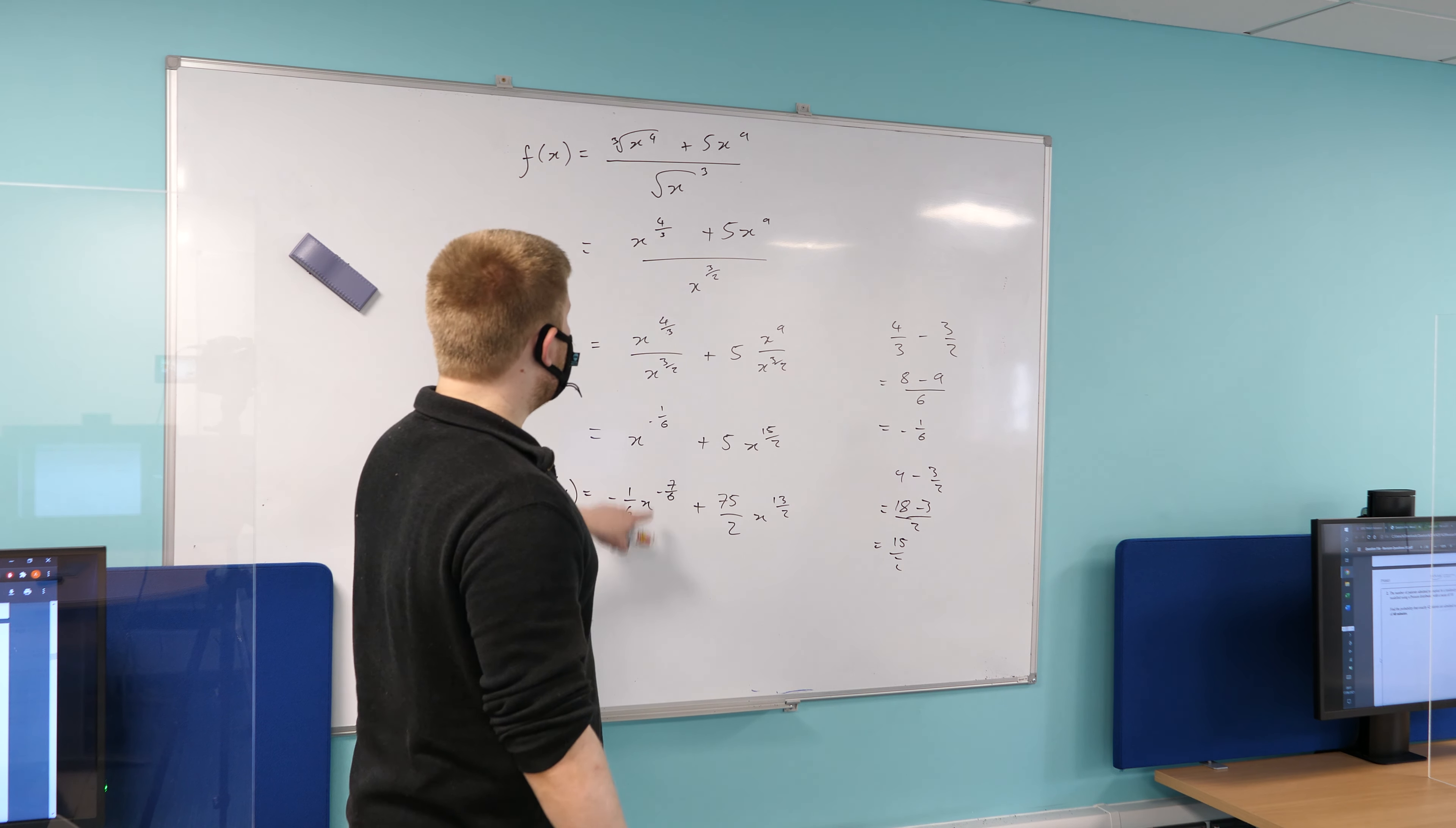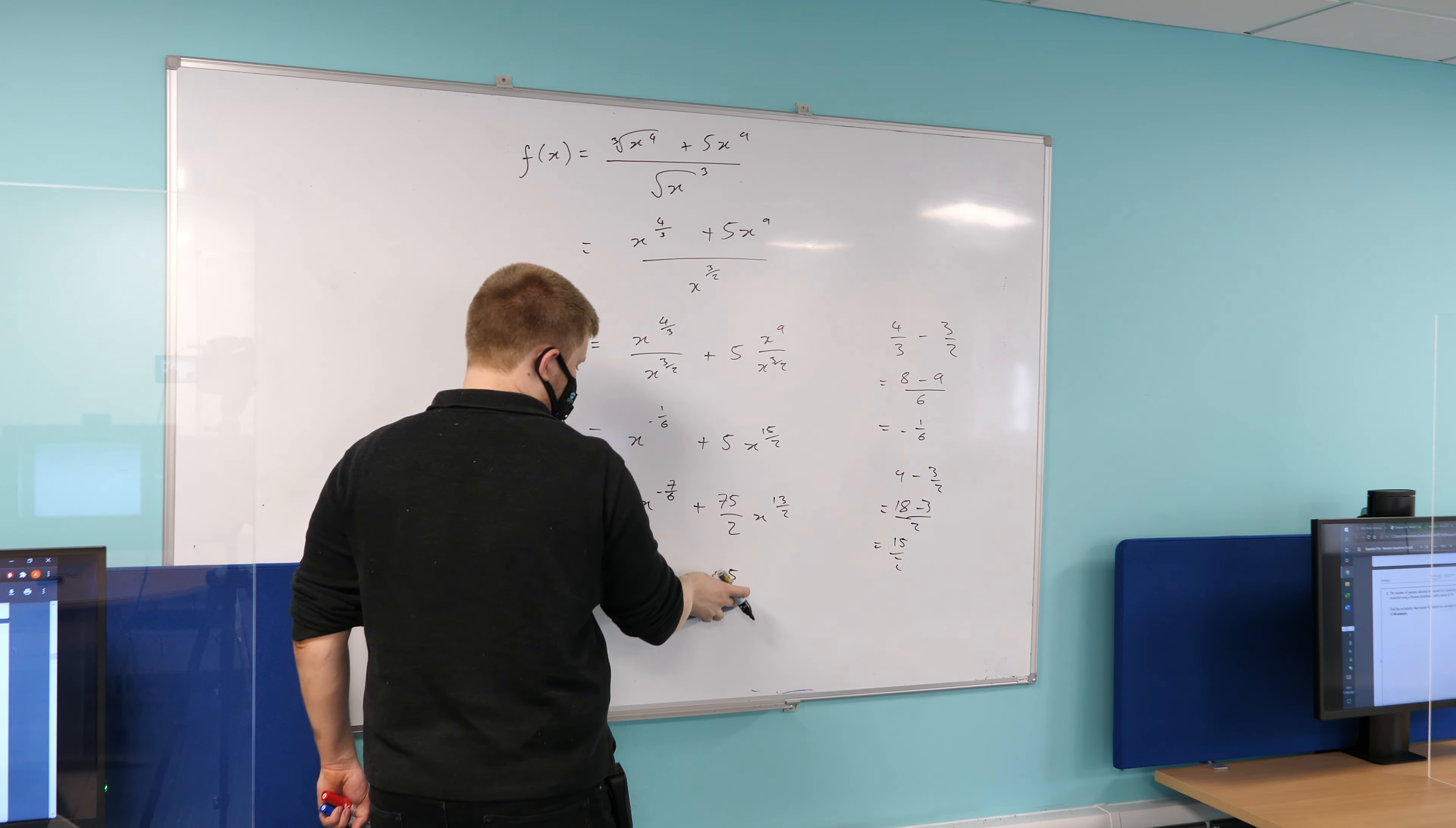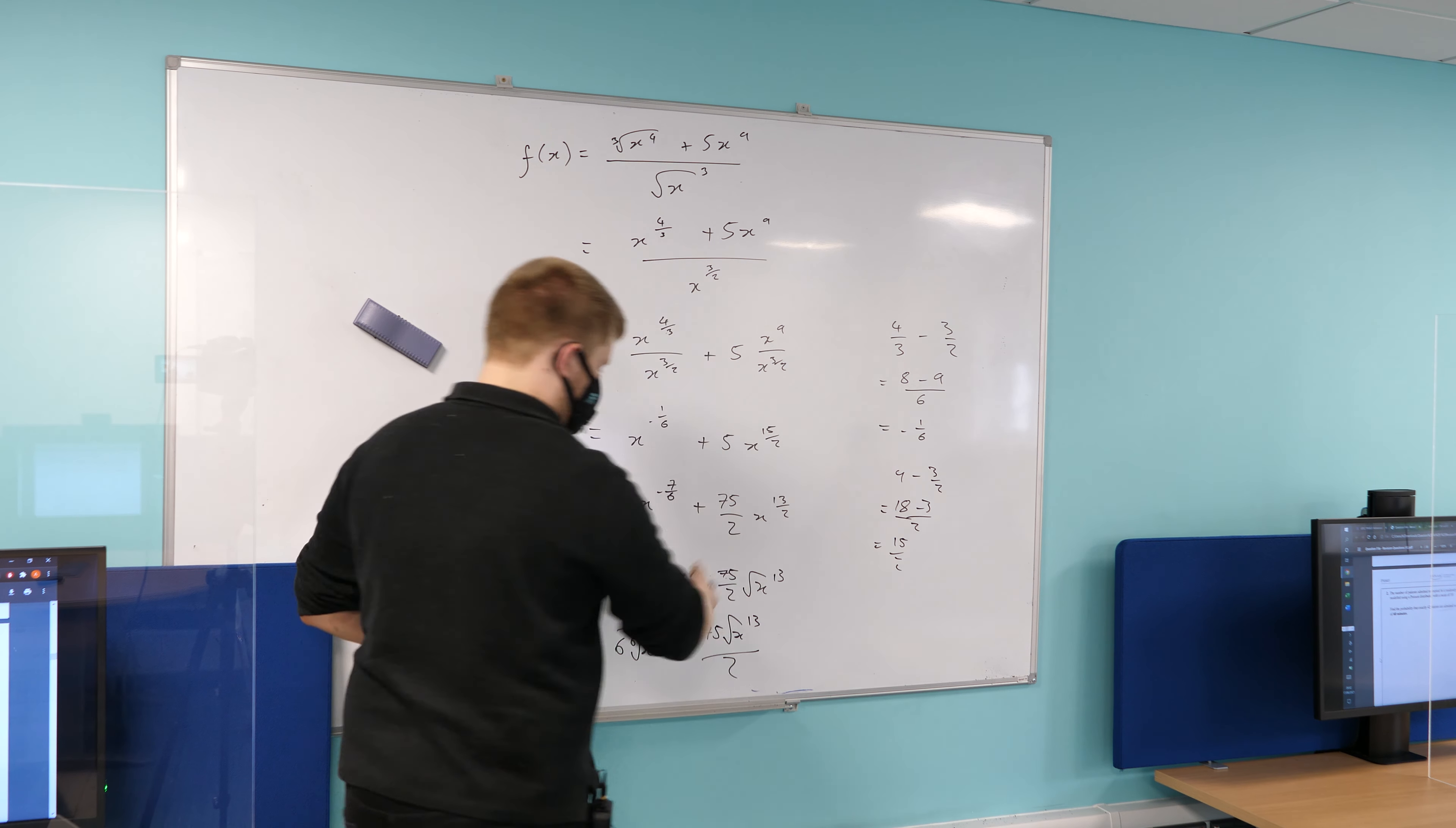The only thing that I'm going to ask you to do is to leave it in the same form that you were given it in. So I didn't give you any fractional powers or any negative powers in the original thing. So in other words, convert it back. So this is going to become negative one sixth. Just remember, x to the power of a negative becomes a 1 over. So this will be times by 1 over x to the power of 7 over 6. Plus 75 over 2, and then that's going to become root of x to the power of 13. And then this I can just rewrite as 1 over 6, and then you've got the sixth root of x to the power of 7. And this is still going to be 75 root of x to the power of 13, all divided by 2. That's fine.